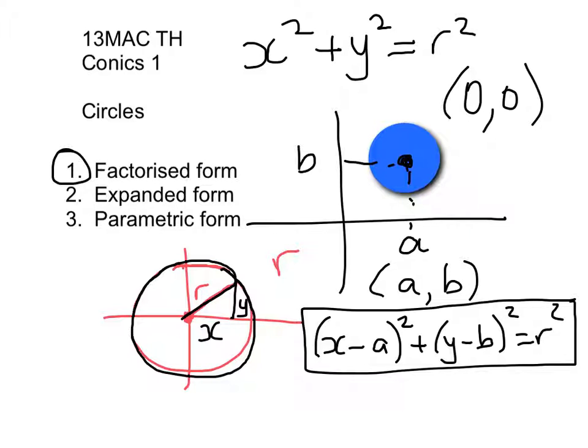There are two other ways to write the equation for a circle. I'm going to do those on a new slide. So if we start with our factorised form, which lets me read off the centre and the radius very easily,